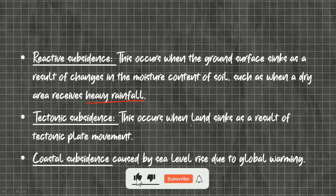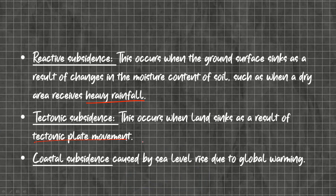The sixth type is tectonic subsidence. This occurs when land sinks as a result of tectonic plate movements, mostly seen in the Himalayan region, because they are the youngest mountains in the world and seismic activity is active in this region.